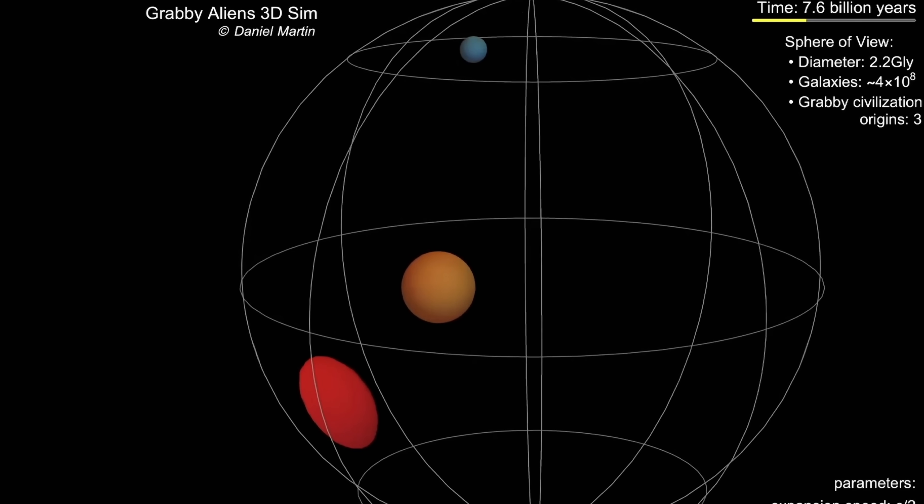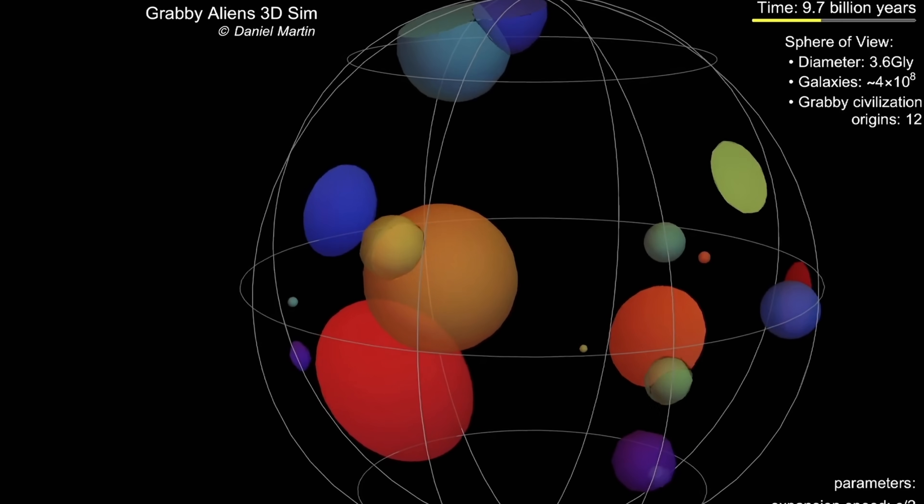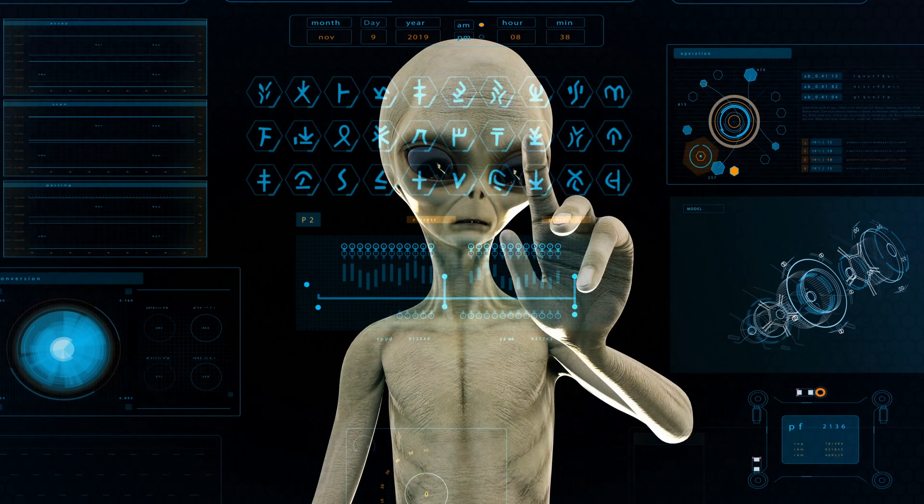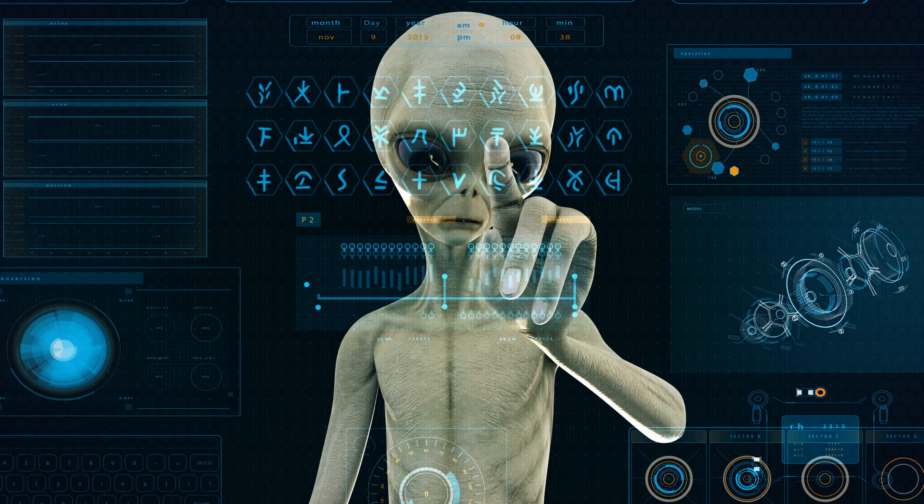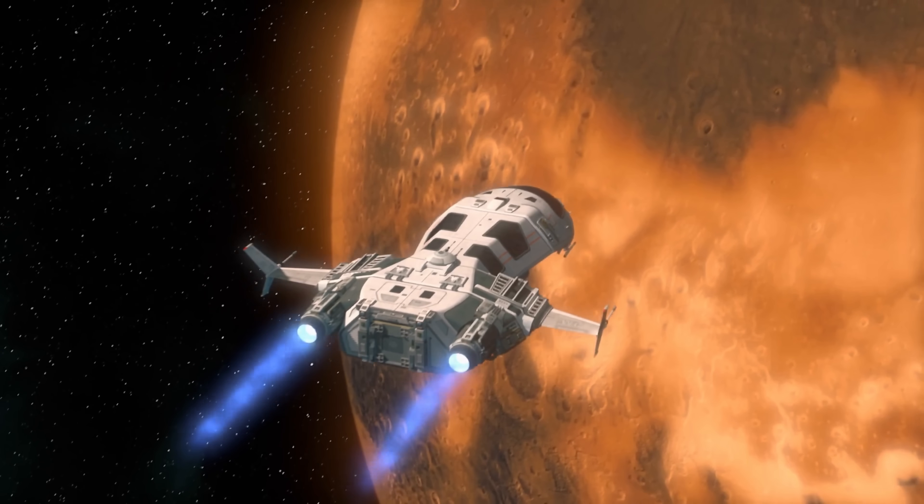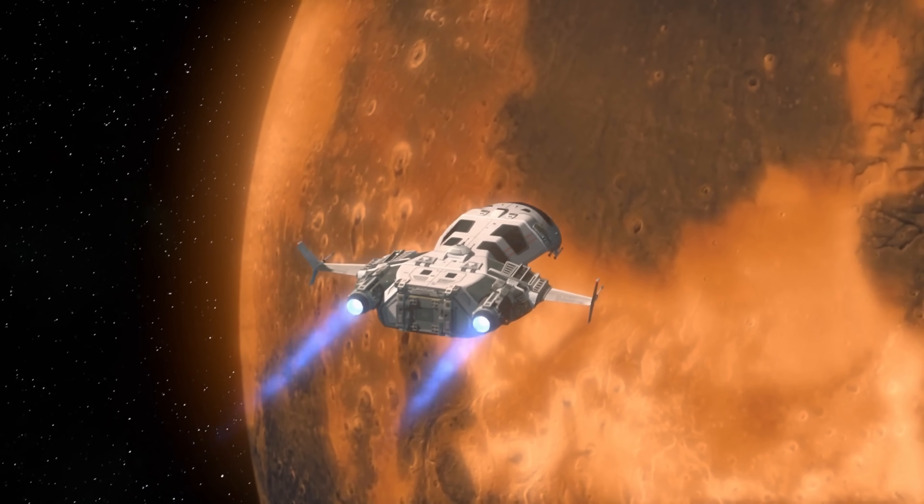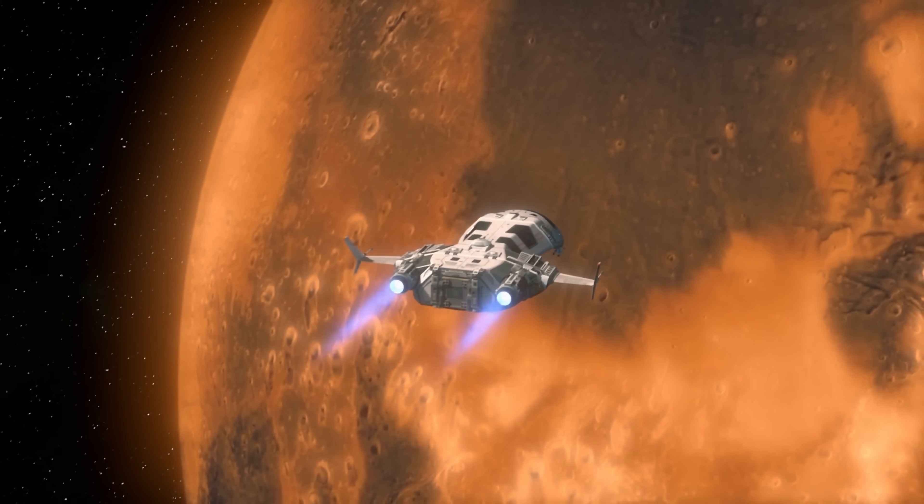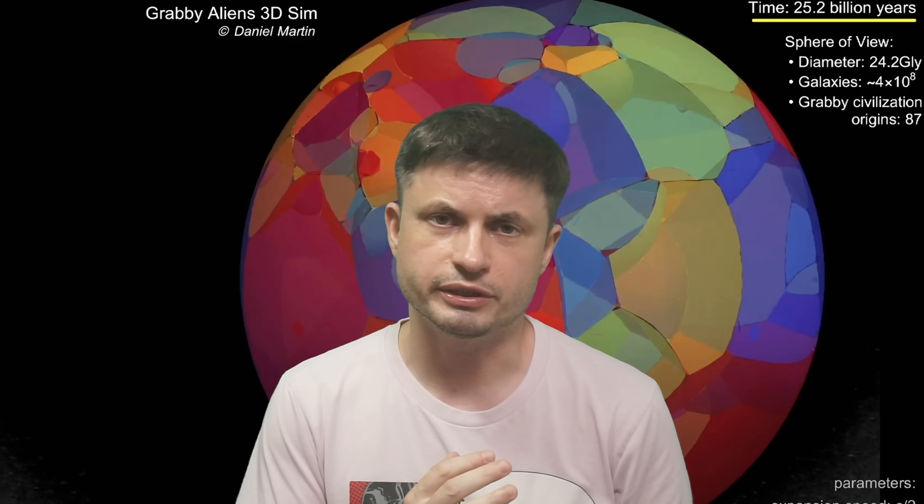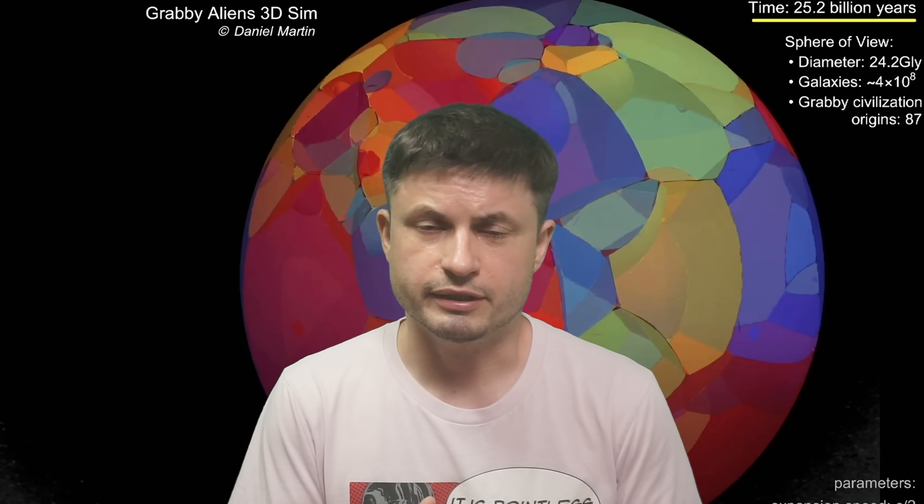So basically, some civilizations appeared billions of years ago, many of them started a little bit later. Only one in about 10,000 or even less than that becomes a loud grabby civilization, essentially conquering the universe one galaxy at a time. And as they do so, they become extremely easily visible with a lot of signs of active technosignatures. What exactly happens to all those quiet civilizations that don't actually show any signs is not a question that's being tackled in this paper. They might become part of the empire, they might be ignored, or they might join the empire and become one of them.